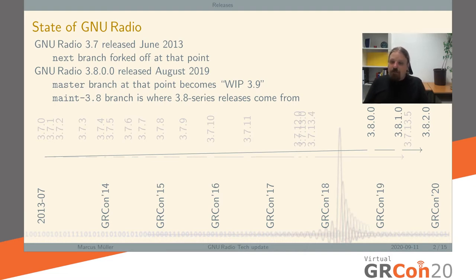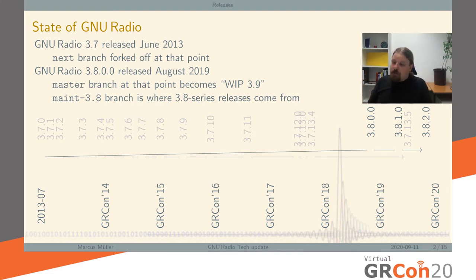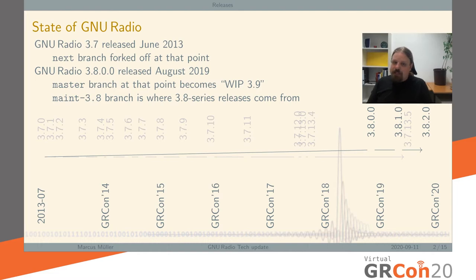When we released GNU Radio 3.8, we changed that model. We had only two branches: one for each release series. That was maint-3.8, where all bug fixes went to keep 3.8 a maintainable release series. And we had a master branch where all new features should go and which should at one point become GNU Radio 3.9. Let's look at these branches in detail.